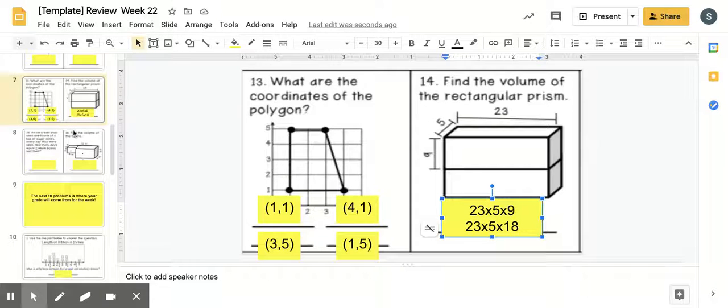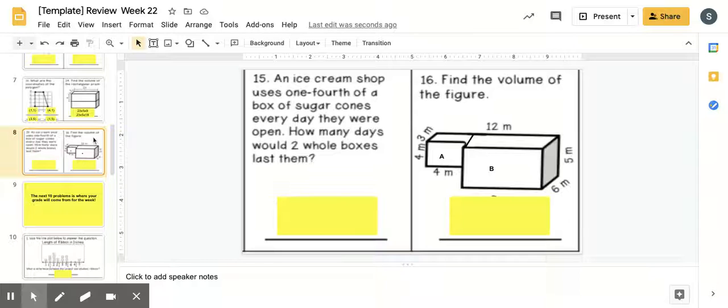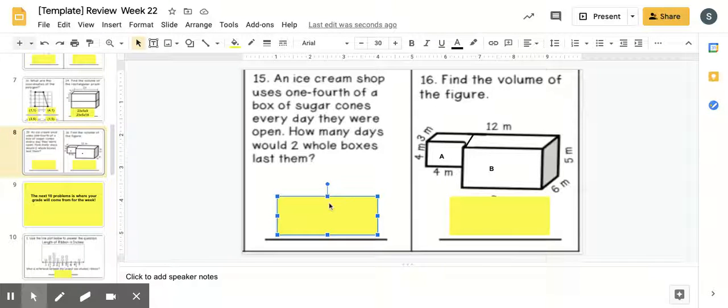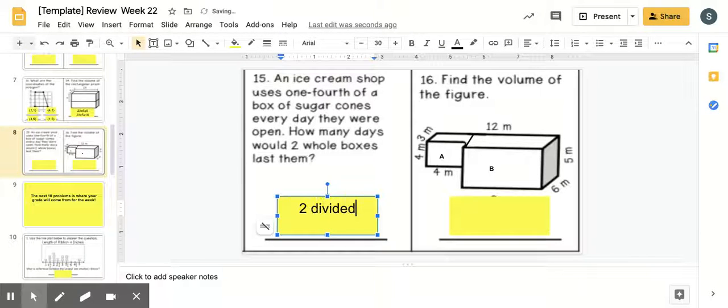Alright, going on to number 14. You can go back after the video. Sorry, number 15. You can go back to number 14 after the video. Number 15. An ice cream shop uses 1 fourth of a box of sugar cones every day they were open. How many days would 2 whole boxes last them? So, we're taking 2 whole boxes and we're dividing it by 1 fourth. So, what is 2 divided by 1 fourth? What does that equal?